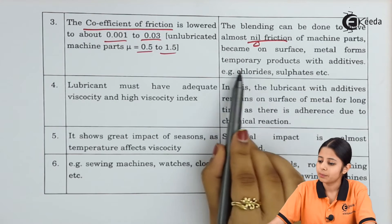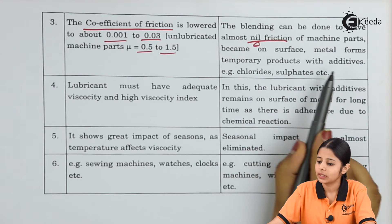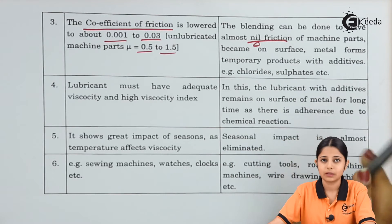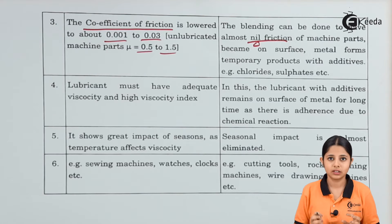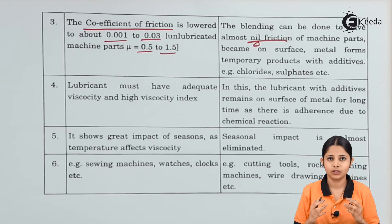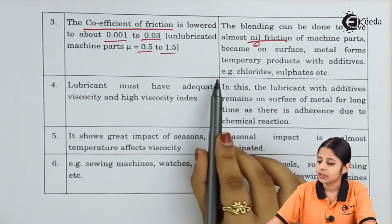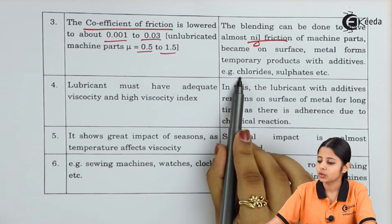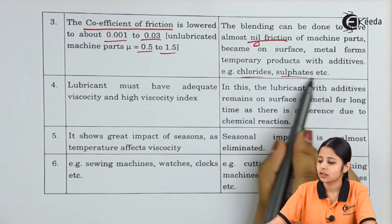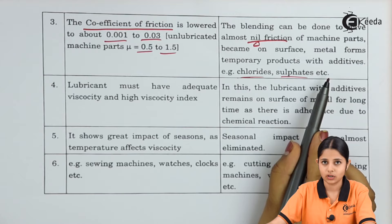In extreme pressure lubrication, the metal forms temporary products with the additives. That means the additives are present for a temporary period of time, but during that period the friction is essentially zero. Examples of such additive compounds include chlorides, sulfates, etc.